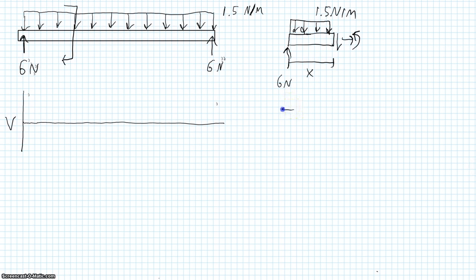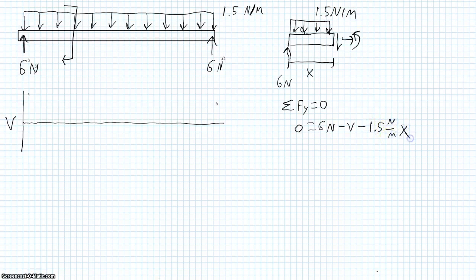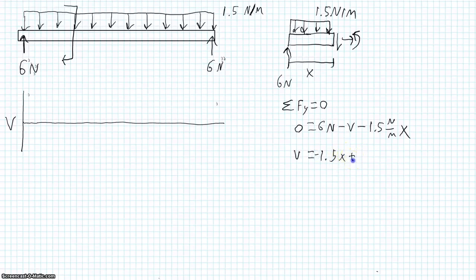we could use the sum of the forces in the y direction and set that equal to 0. So we have 6 newtons minus the shear minus 1.5 newtons per meter times x, which is the width of our cut. And so in this case, our shear is equal to negative 1.5x plus 6 newtons.